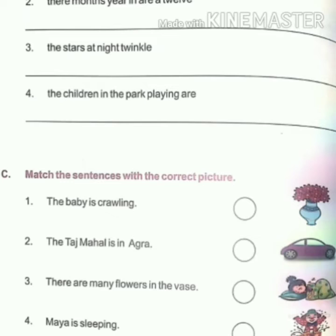Next is B: rearrange each group of words to make a complete sentence. Number one: 'my beautiful is dress.' The correct answer is 'My dress is beautiful.' — 'M' will be capital and end with a full stop. Number two: 'There are twelve months in a year.' Number three: 'The stars twinkle at night.' Number four: 'The children are playing in the park.' Full stop.